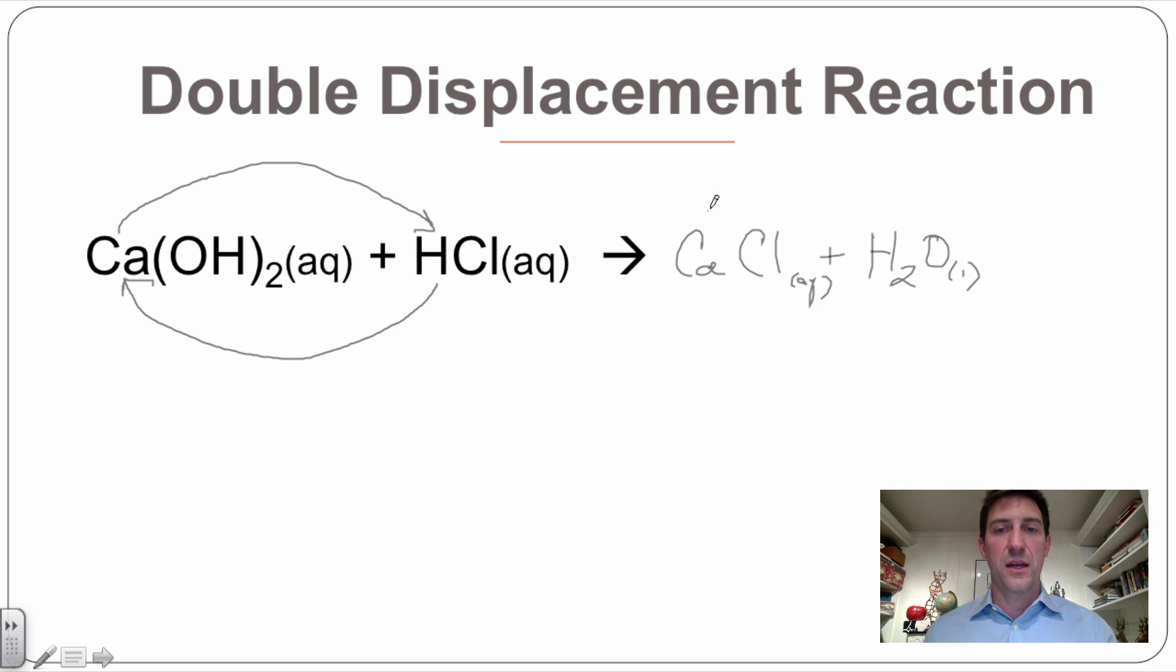These are all going to be aqueous and this is going to be liquid. And then I know calcium's got a two plus charge. Chlorine's got a negative. So I need a two here. This is already fine because it's water. It is covalently bonded, which is H₂O.